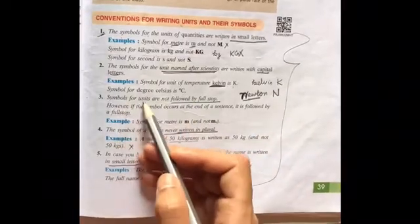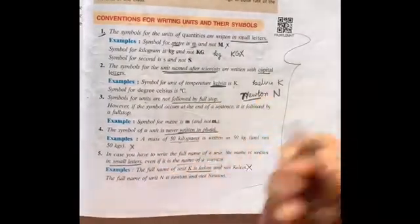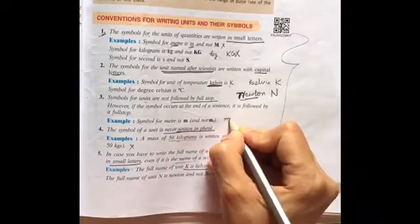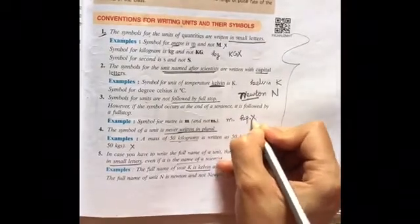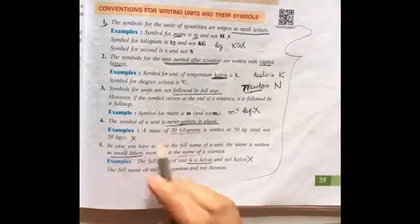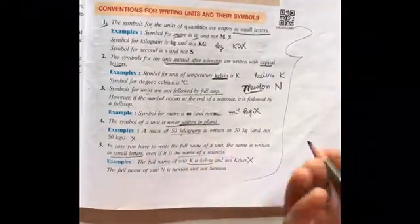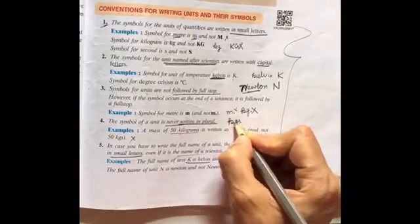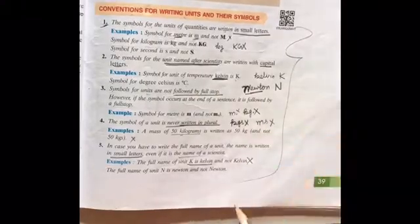Symbols for units are not followed by full stop. If we are writing m dot or kg dot, these are incorrect. It's simple m. The symbol of unit is never written in plurals. If we are writing kilogram kgs, it is wrong. Meters ms, it is wrong. Only kg, only m.